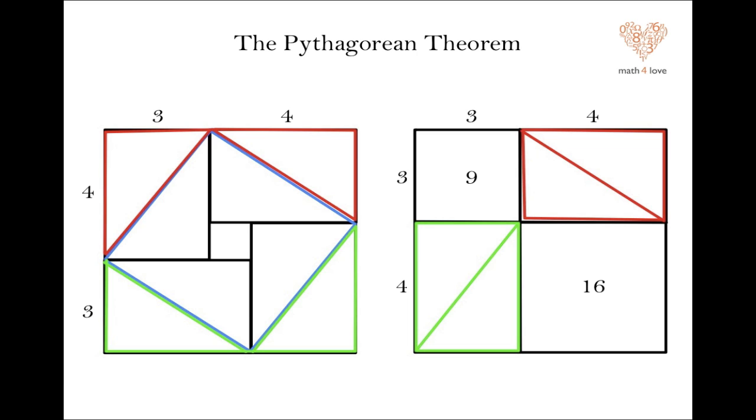In other words, if we want to find that area of the blue square, it just should be the same as those two squares on the right. And indeed, nine plus 16 is 25, the same answer we got before.